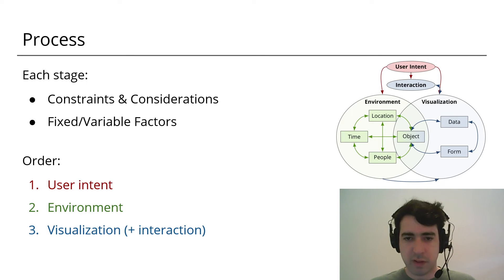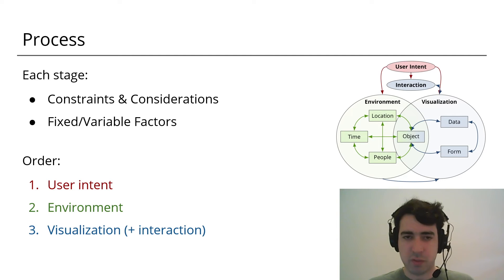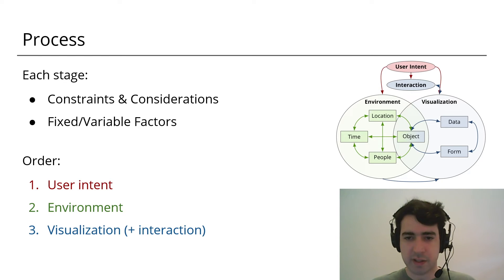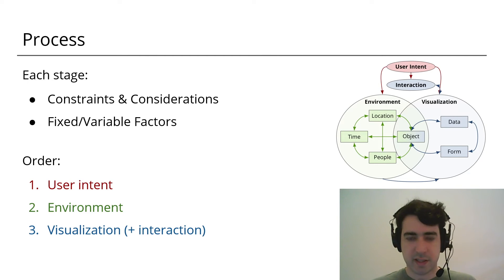The process involves moving through the framework figure based on color. So we start with user intent, then move to environment, then move to visualization and interaction. At each stage, considering how the factors will influence each other, narrowing down the problem space and refining the design of the visualization.